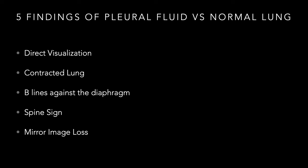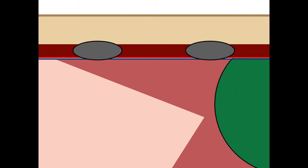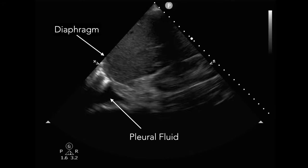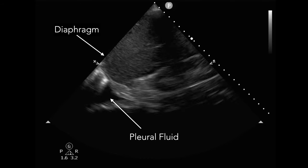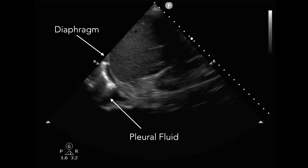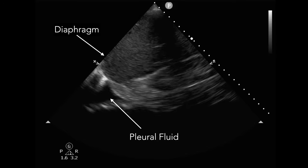The first finding is direct visualization — as the name implies, it's just seeing fluid. Here's the right upper quadrant view. You see the liver and kidney, identify the diaphragm — that bright white hyperechoic line above the liver — and you can see there is some black anechoic fluid existing in that pleural space. You can just directly see it. It's pretty obvious once you know what a normal looks like, you say: this is abnormal. This is an example of direct visualization; in this situation it's a pretty small effusion.